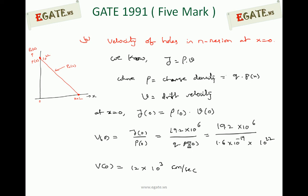V(0), the velocity of holes in the N region at X equal to 0, is what we are calculating. V(0) equals J(0) divided by rho(0). The current density J(0) is already calculated as 19.2 into 10 to the power 6, divided by the charge density rho(0), which is Q into P(0). Q is 1.6 into 10 to the power minus 19 and P(0) is 10 to the power 22.